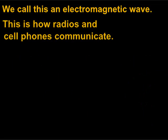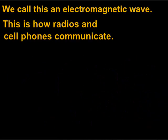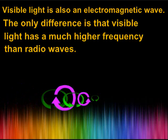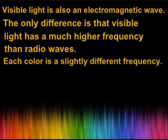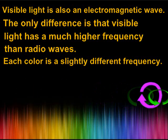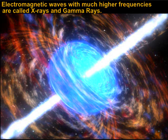This is how radios and cell phones communicate. Visible light is also an electromagnetic wave — the only difference is that visible light has a much higher frequency than radio waves, and each color is a slightly different frequency. Electromagnetic waves with much higher frequencies are called X-rays and gamma rays.